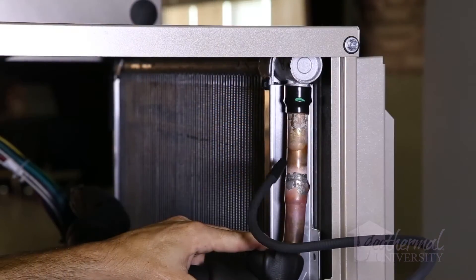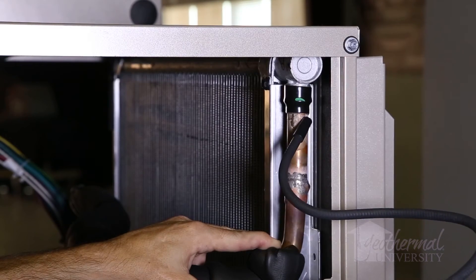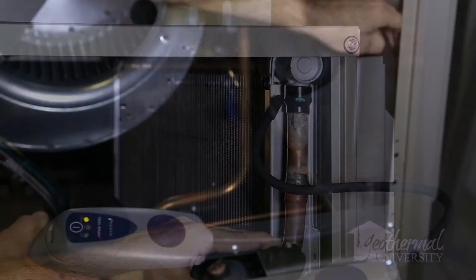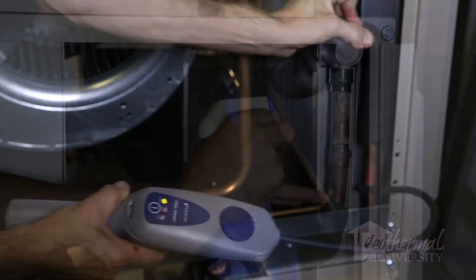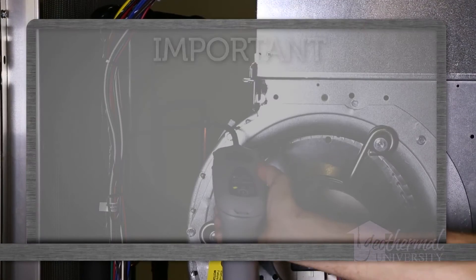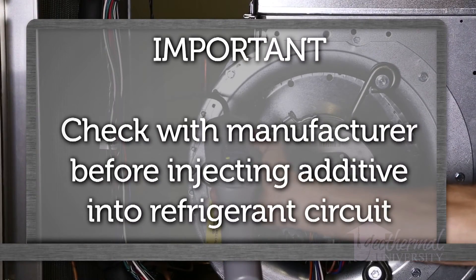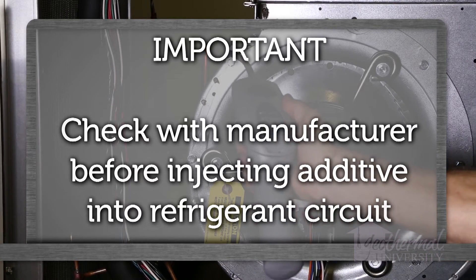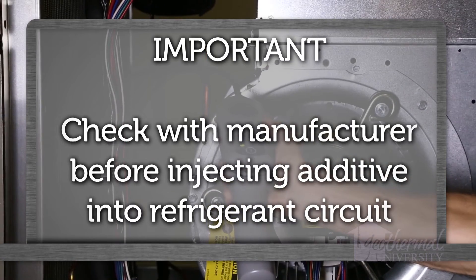The easiest and quickest method of leak detection is the electronic sniffer. That will usually lead the technician to the general area. If the leak is big enough, we can use soap bubbles. There are other leak detection systems available. Since many of the practices induce dye or a liquid tracer, we recommend contacting the equipment manufacturer before using.